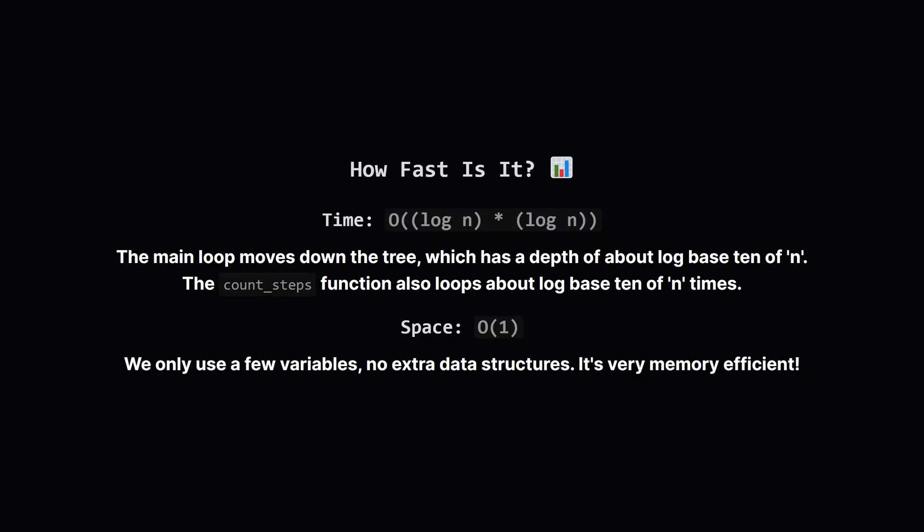So how much better is this new approach? It's incredibly fast. The time it takes is roughly the logarithm of n times the logarithm of n. This is because our main loop basically travels down the tree, and the depth of the tree is related to the number of digits in n, which is log n. And for each step, our helper function also does a log n calculation.